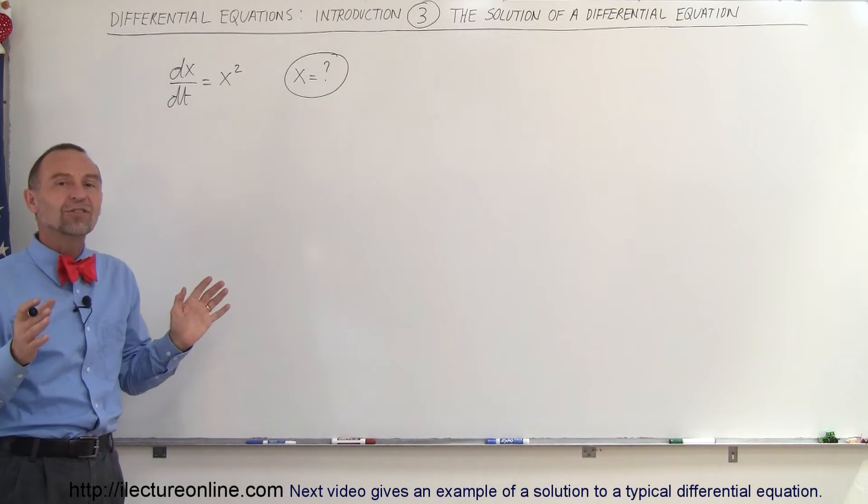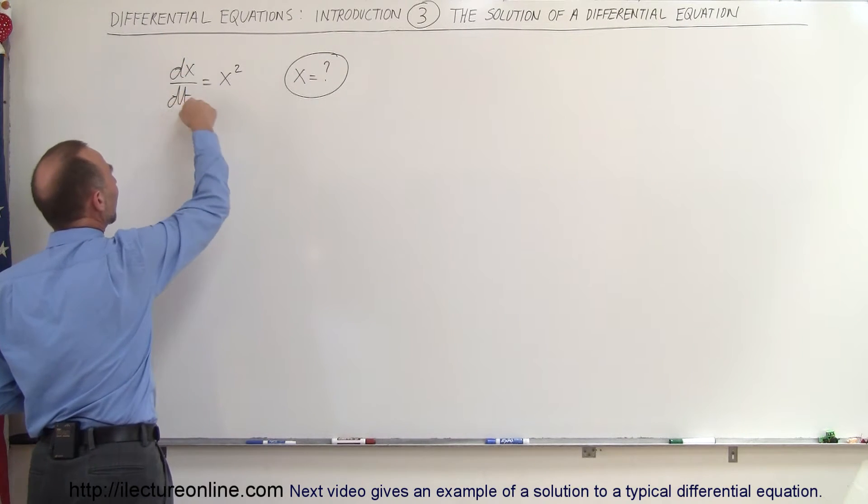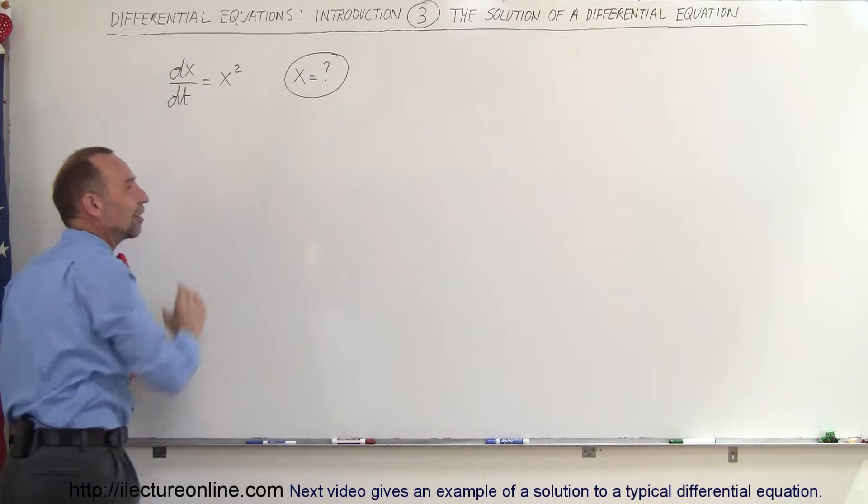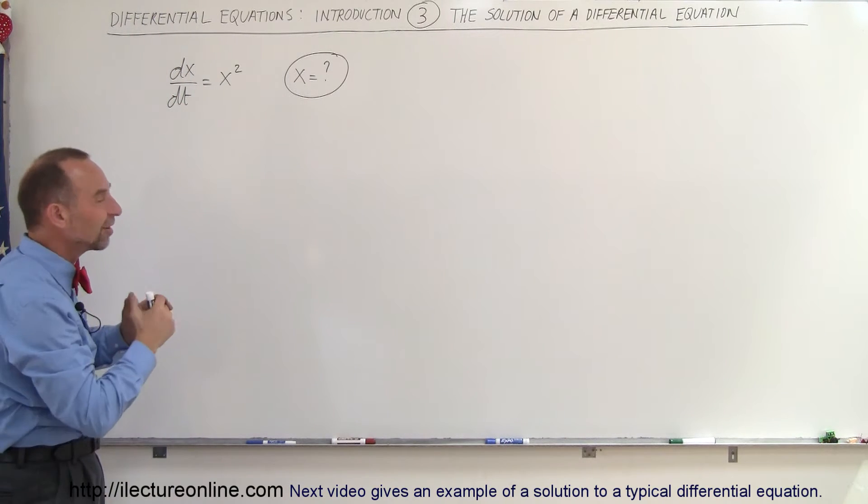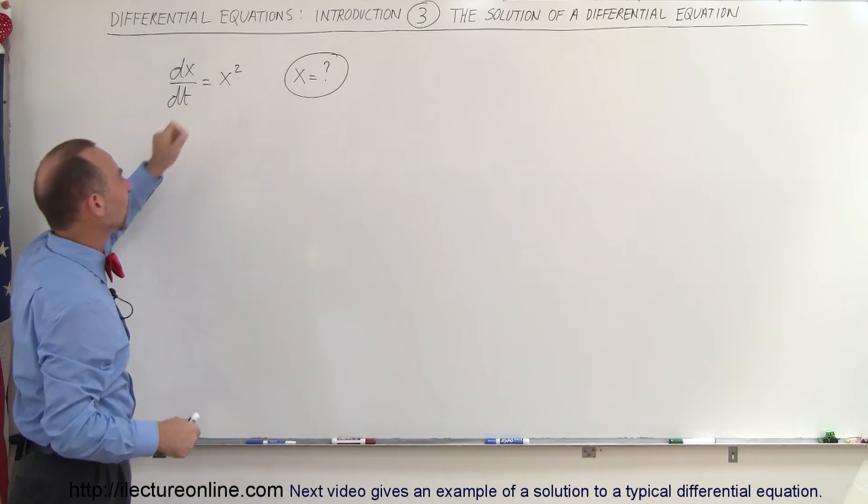Well in this case we're going to what we call separate the variables. Here we have dx/dt, so on the same term we have an x and the t, same variable on the same term. We don't want that, we want to separate them. We want to bring the t over here and then we want to bring the x squared down here.